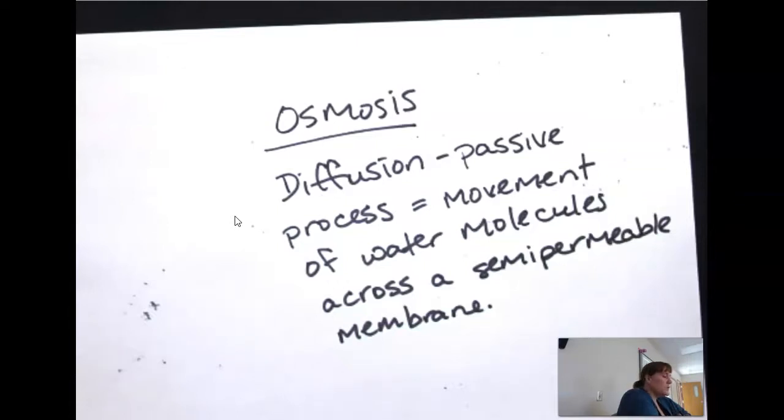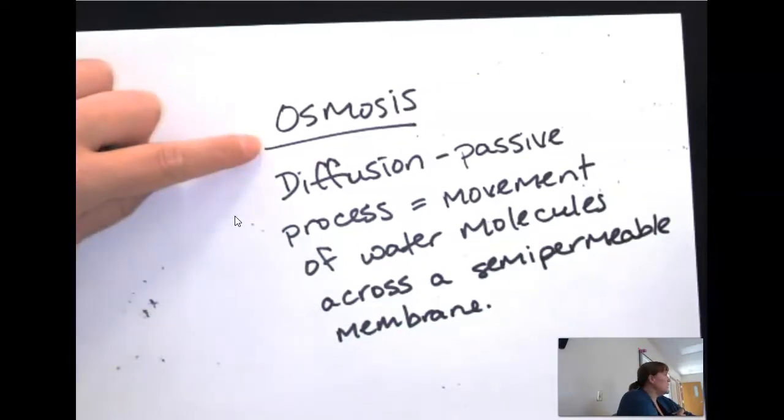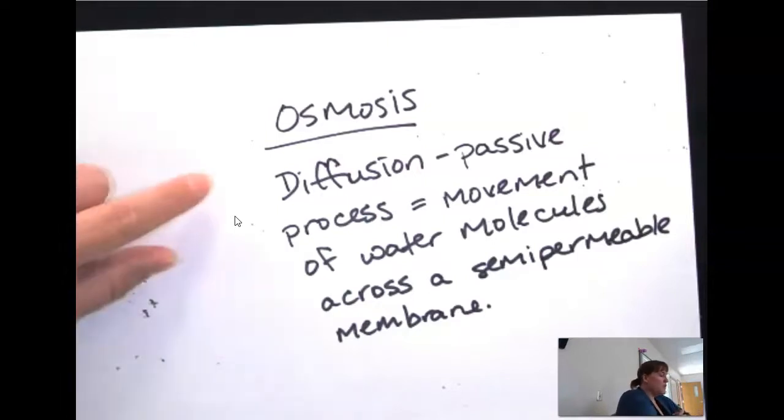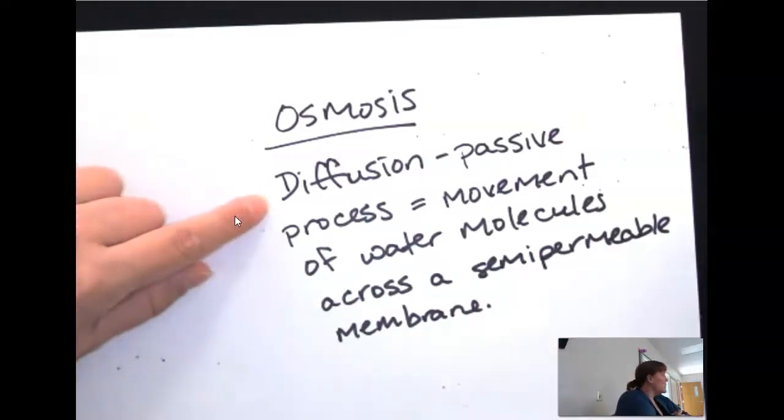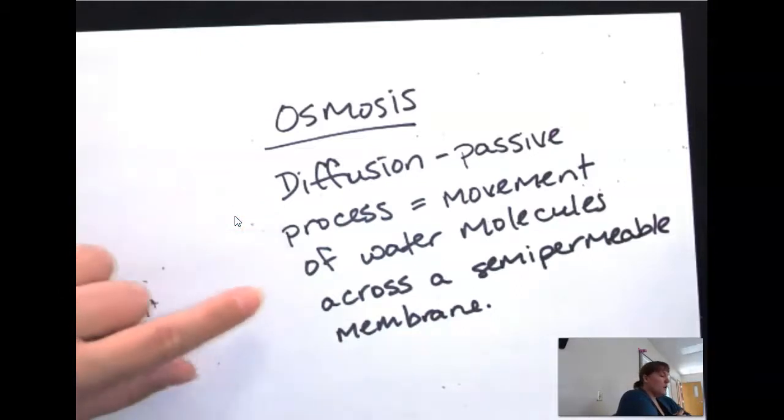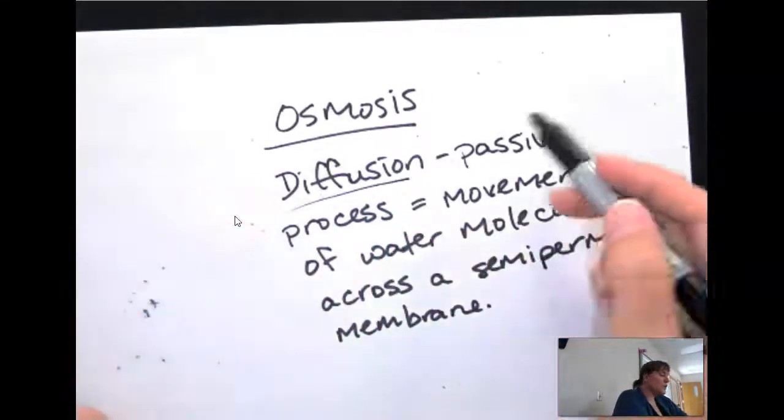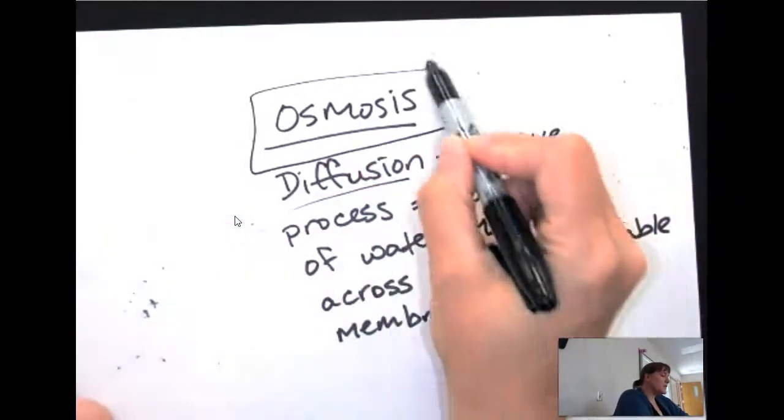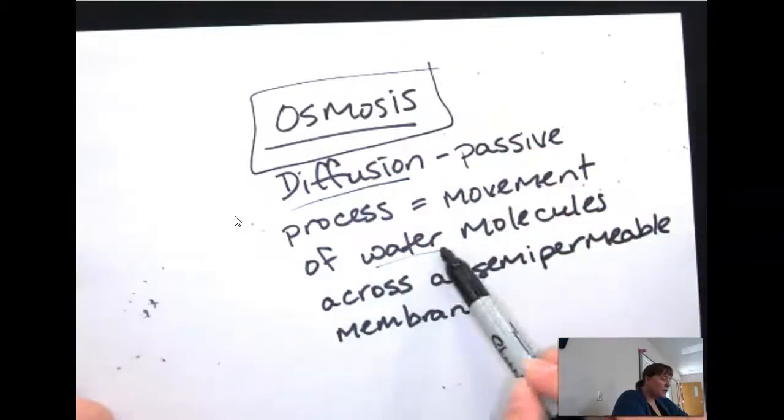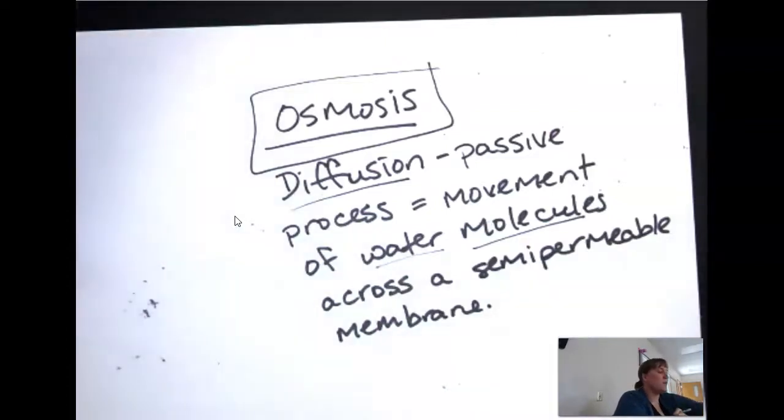Osmosis is moving into and out of the cell without any ATP or energy necessary. We didn't have to heat it up, we didn't have to stir it. It's just moving back and forth. So that is diffusion and it is a passive process. But other than diffusion being a generic term, osmosis is water. So the thing that is moving is water and we really want to remember that.